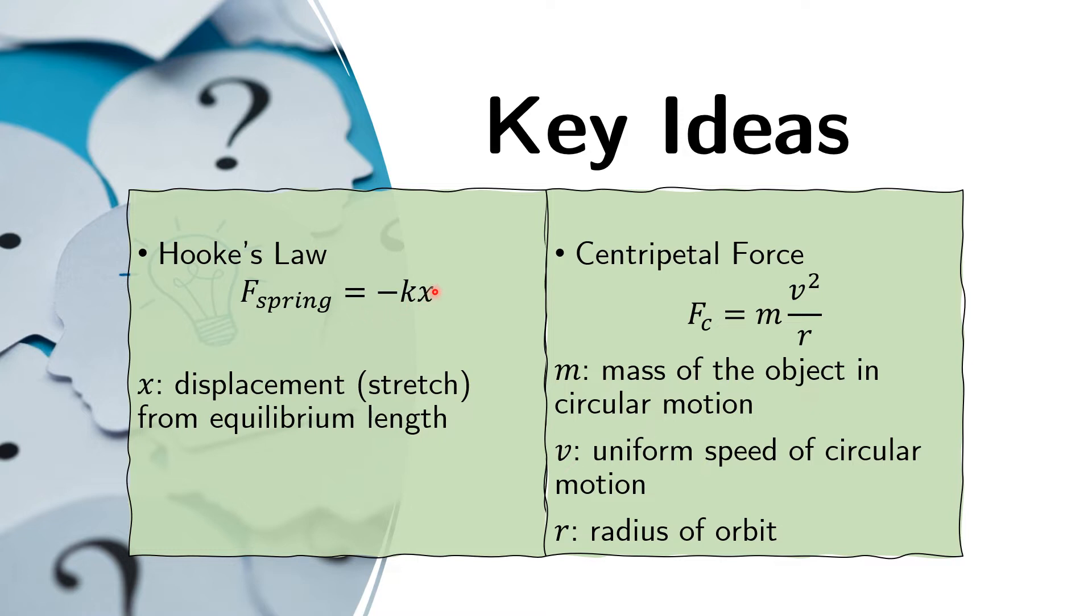If the X here is negative, in other words, we have a compression of the spring, then the force that the spring applies is towards elongating the spring. So that's what the negative sign means. It means that the force that the spring applies is opposite in direction to that of the displacement.